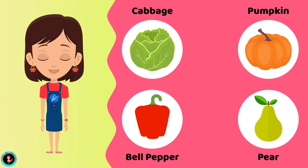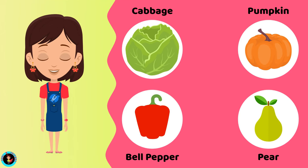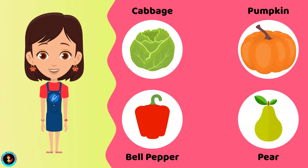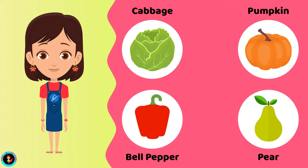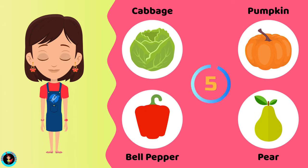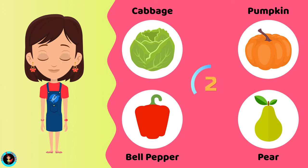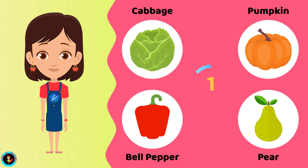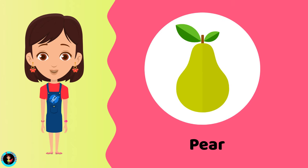Which among these is a fruit? Cabbage. Pumpkin. Bell pepper. Pear. The right answer is Pear. Pear is a fruit.